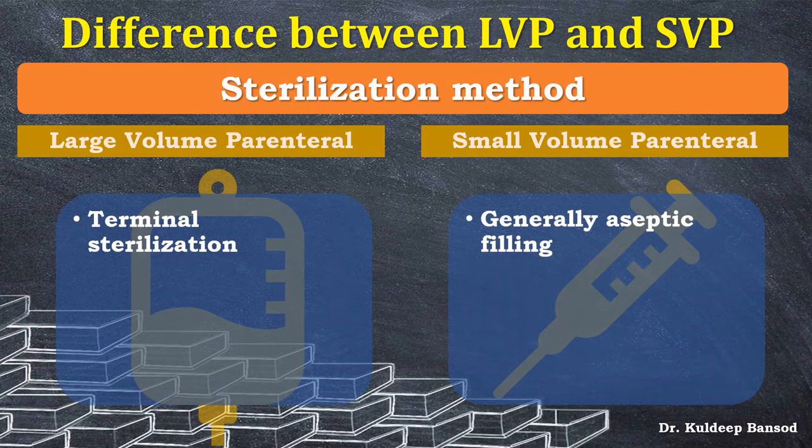Another difference is the sterilization method. Large volume parenteral products are specially terminally sterilized — they are prepared and then sterilized as finished products. Small volume parenterals are generally produced by aseptic filling, so there is no separate sterilization step as they are prepared under aseptic conditions.